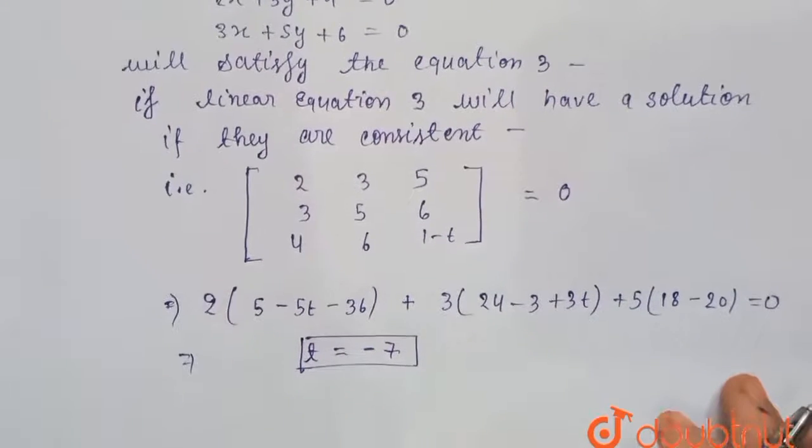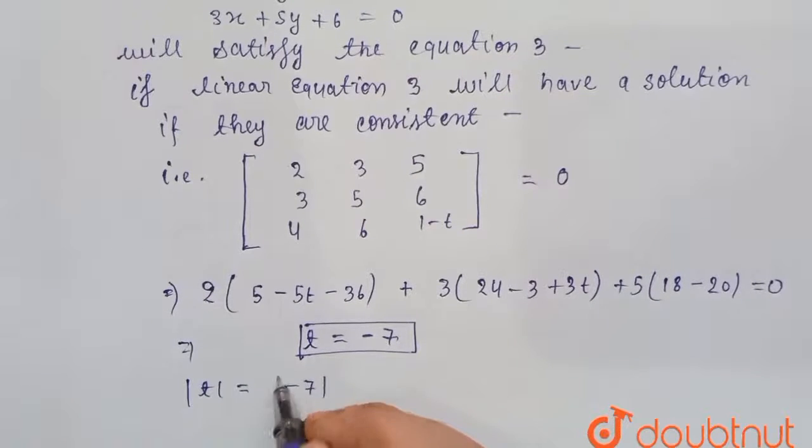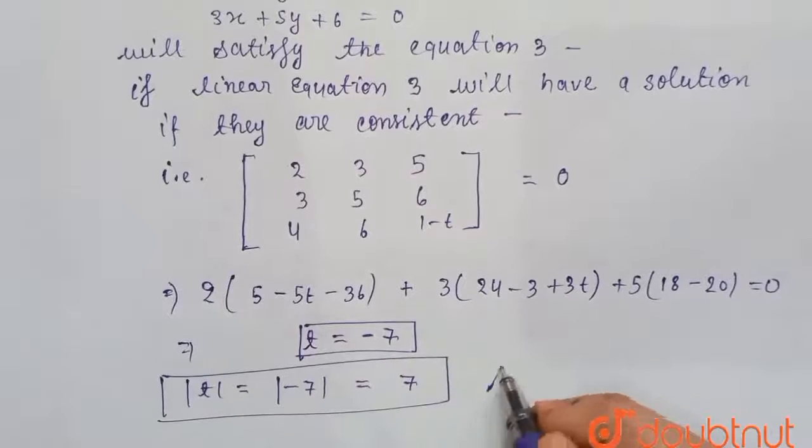Now, we have to find mod of t. Mod of t will be minus 7 mod, that is 7, and this is our answer.